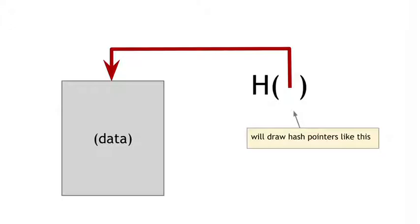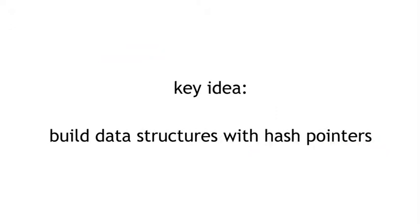We're going to draw a hash pointer in diagrams like this: 'h of' and then an arrow that points to something. So anything drawn like this, think of it as being a hash pointer — a pointer to where it's stored, and also the hash of the value that this data had when we last saw it. We can take hash pointers and use them to build all kinds of data structures.